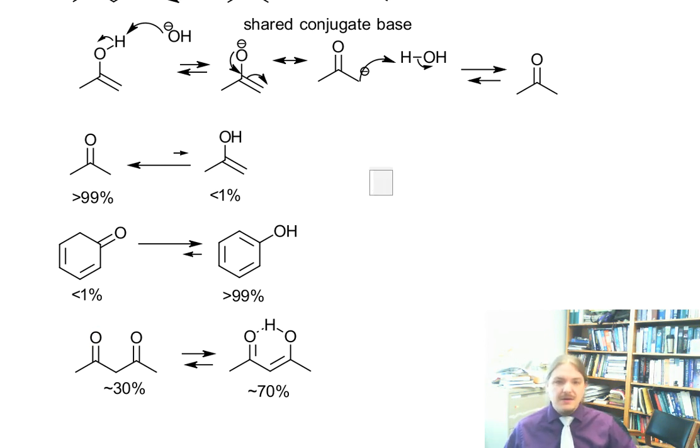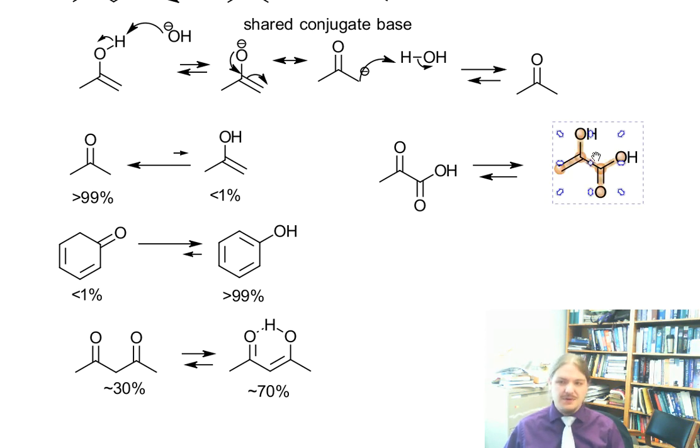There's another type of situation where there's a significant amount of enol present. And I'm just going to share it because it's sort of biologically important. So, this is pyruvic acid, which is a really biologically important molecule. And it has two carbonyl groups and it's the ketone part of it that can be present in the enol form.